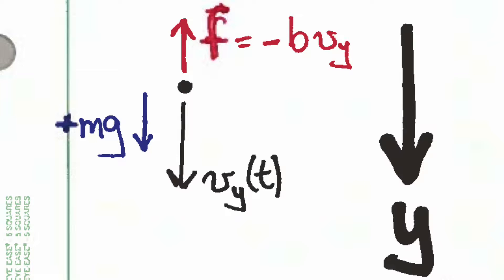Next we'll look at vertical motion. In this case we have no motion along the x-direction; all the motion is along the y-direction. This diagram shows the force balance for a particle falling vertically. We're imagining that y is increasing going down, so we have a y-velocity in the positive direction. There's a force of gravity, mg, pulling in the positive y-direction, and the force of air resistance resists the motion, pointing upward into the negative y-direction.